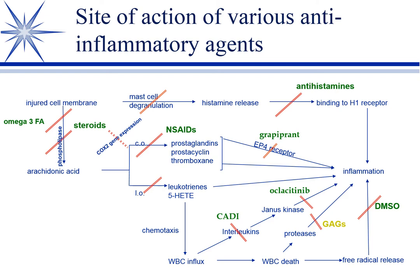Another thing is that interleukins are being released — this is a newer, specialized pathway that wasn't in this lecture maybe three years ago. CATI is canine allergic dermatitis immunotherapy — it's a monoclonal antibody that inhibits a specific interleukin. And Oclacitinib, which is Apoquel, is a Janus kinase inhibitor that stops the cascade that the interleukin started. So now you see we can intervene in a whole variety of ways to control inflammation, and every drug listed here you will use.